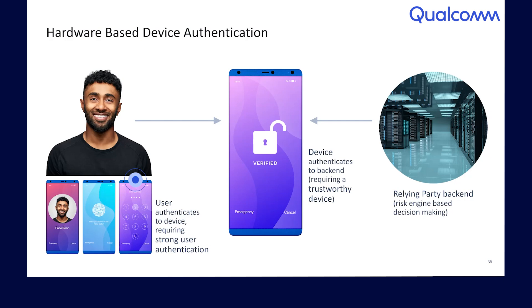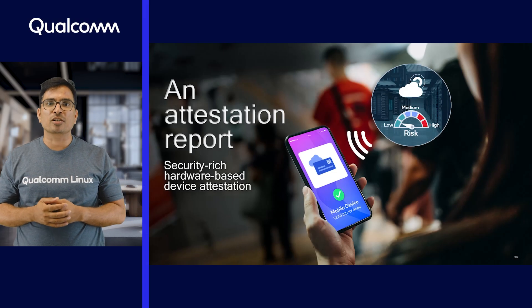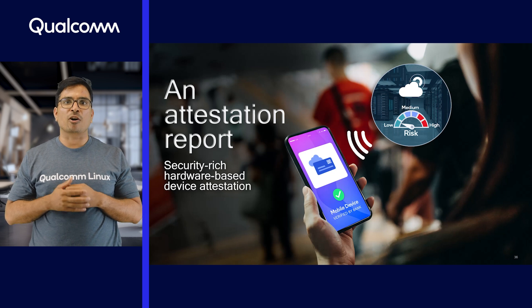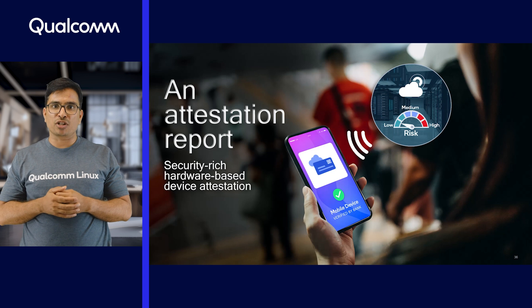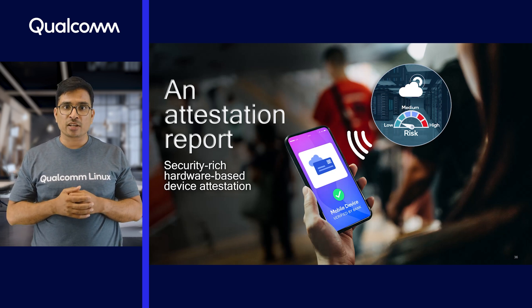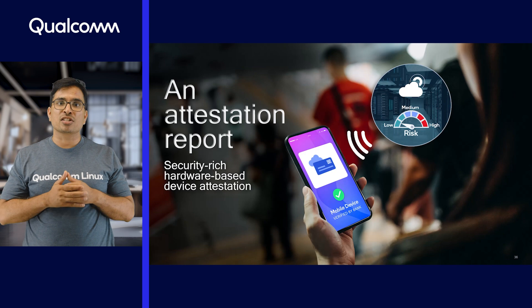These hardware-based authentication mechanisms are desired across a wide range of security use cases on IoT devices. For example, in a storefront payment solution, authorization of payment could require two-step authentication: device-based user authentication followed by device authentication by the relying party. A Qualcomm-based framework running in Qualcomm TE facilitates hardware-based device attestation, giving a relying party sufficient assurance that the device is trustworthy and the user authentication result is genuine.